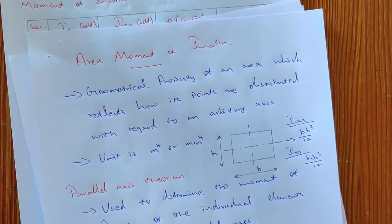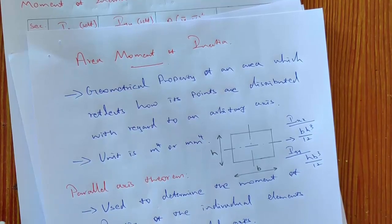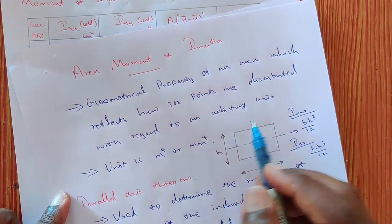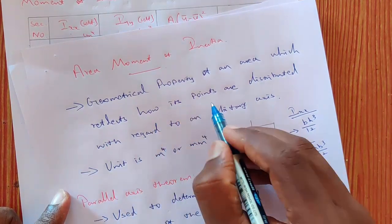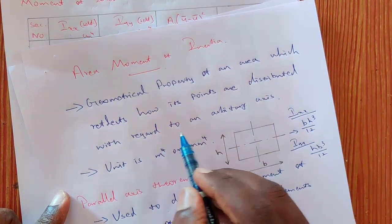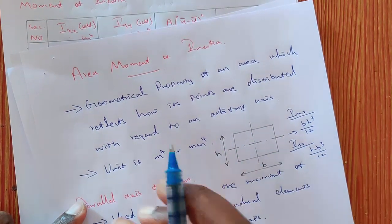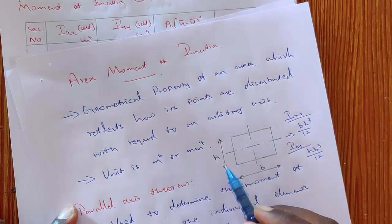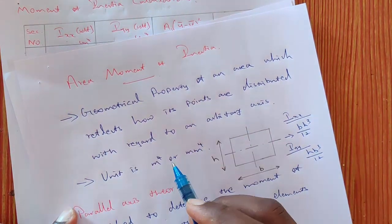Hello all, welcome to this introduction lecture on area moment of inertia. The area moment of inertia is defined as the geometrical property of an area which reflects how its points are distributed with regard to an arbitrary axis. Generally, we calculate the mass moment of inertia for structures, but since it is an area, the mass is negligible, so we calculate the area moment of inertia, which is a geometrical property.